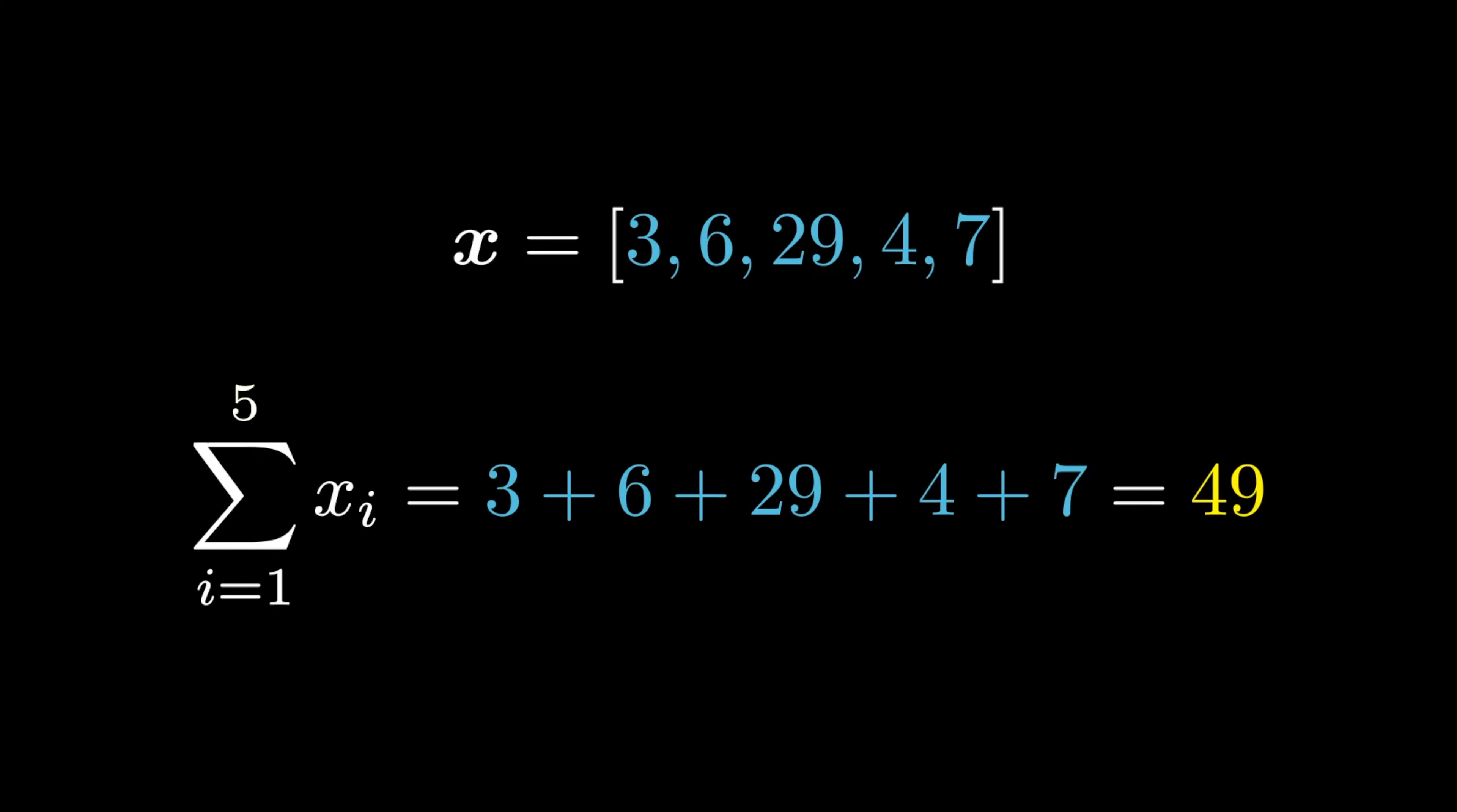If you see an uppercase sigma, more than likely you are dealing with a summation, which essentially says add up all of the x elements together in a given list or vector. Since there are five elements, you would read this as for i equals one through five, add all of those x elements.